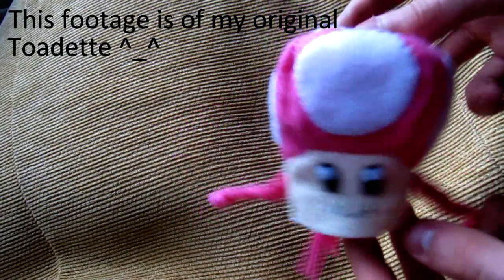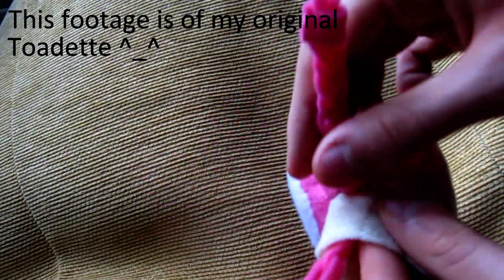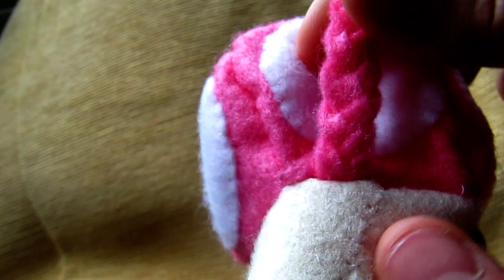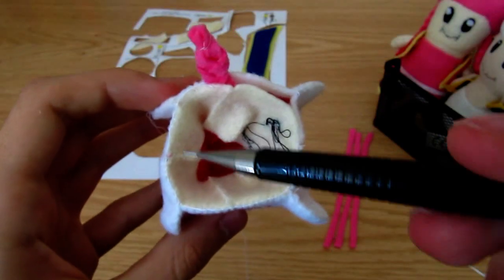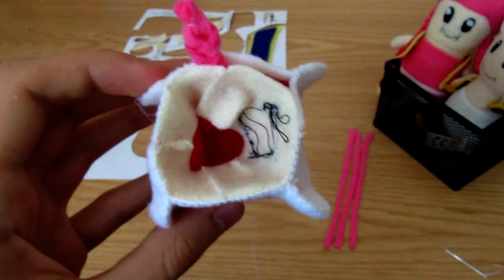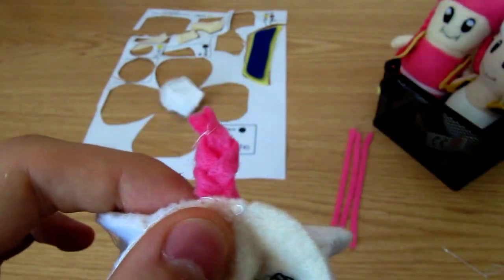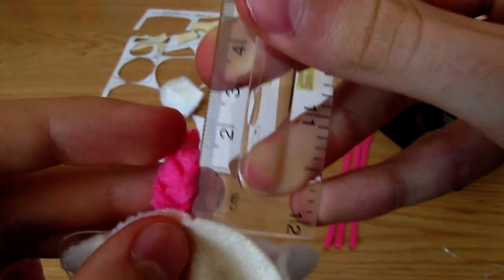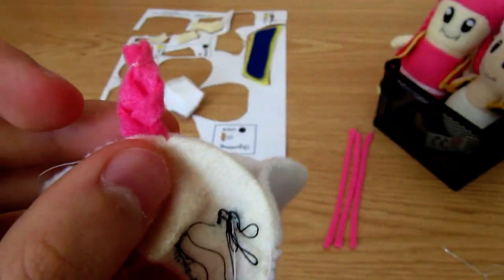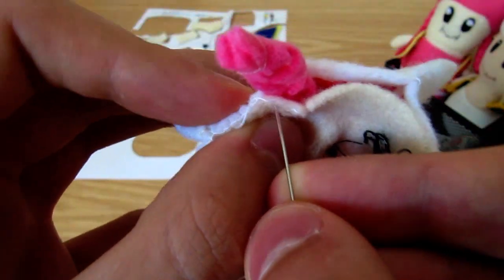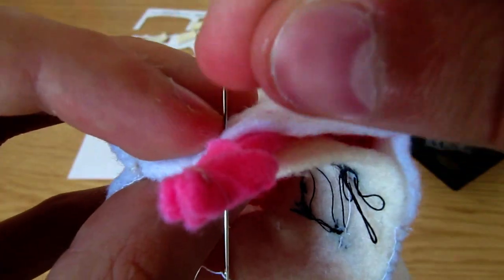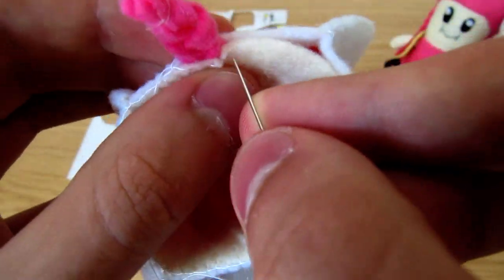Unless you're making Toadette, in which case you'll need to put the braids in position too. Put them on the sides of the head towards the back, like this. When you get to them, you can trim the ends shorter and carry on with blanket stitches over them, or you can just go in and out of the felt and braids from one side to the other. Do whichever you prefer.